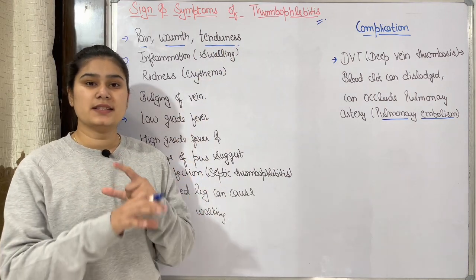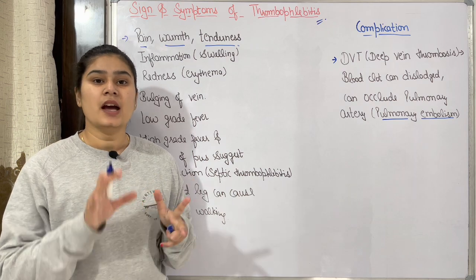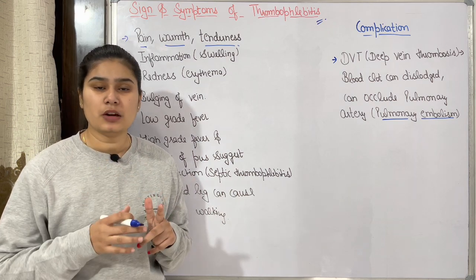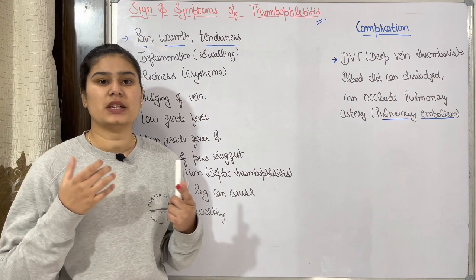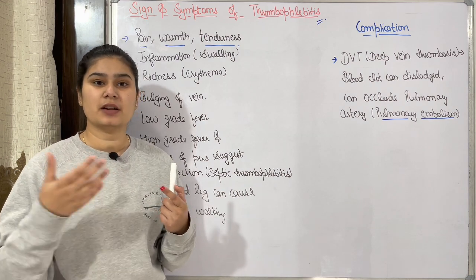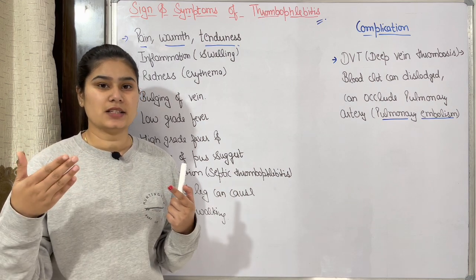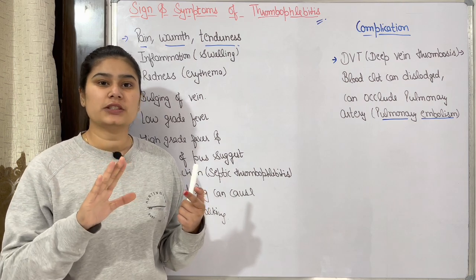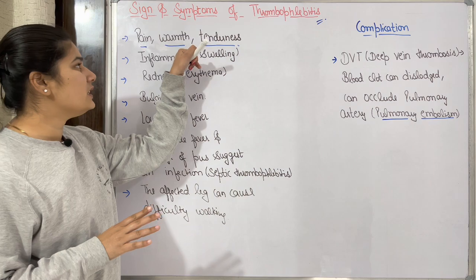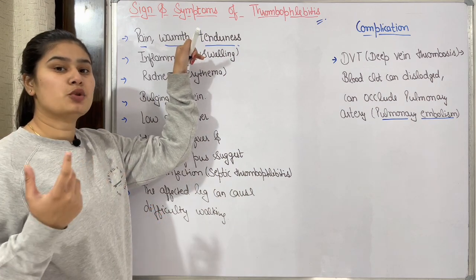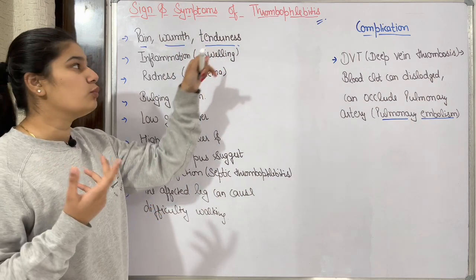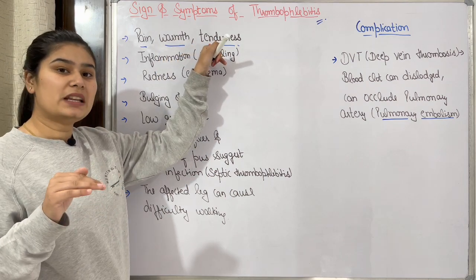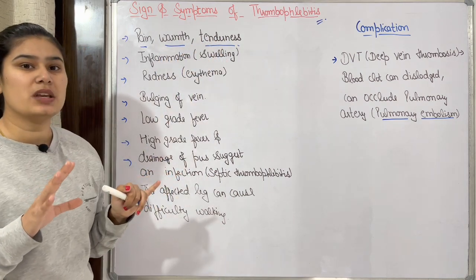In the affected area where the vein is affected, if we touch it, it will feel painful — tenderness. For example, if we go on a hike or fall, our muscles will cramp and when touched it will feel pain. In the same way, if we have thrombophlebitis in the leg, that particular area will have pain, warmth, and tenderness.